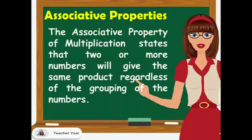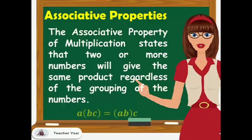Next, we have the associative property of multiplication, which states that two or more numbers will give the same product regardless of the grouping of the numbers. So, we have a times b times c.